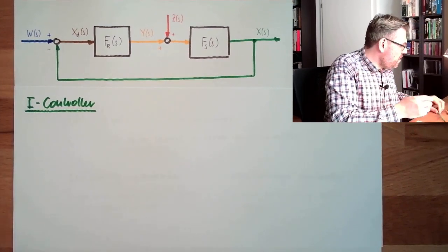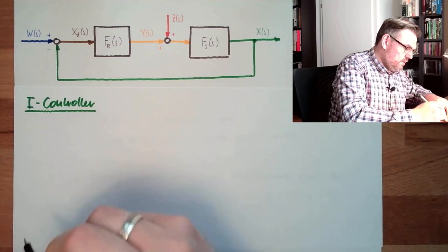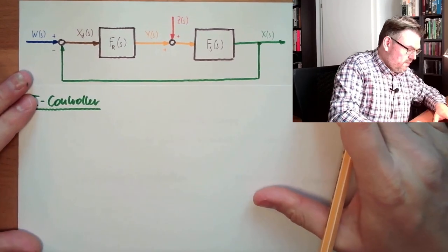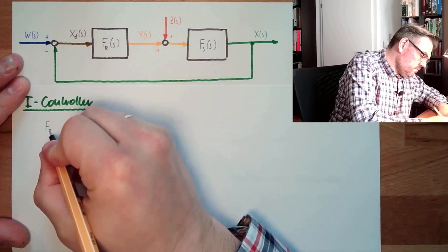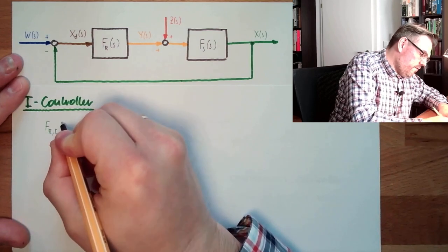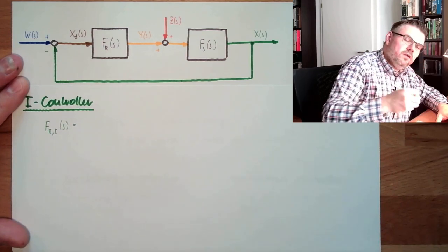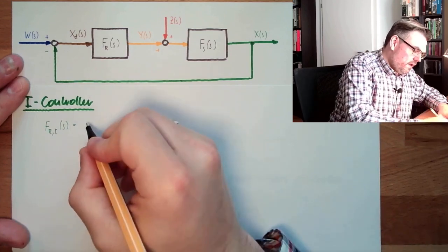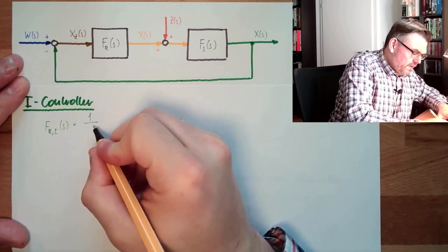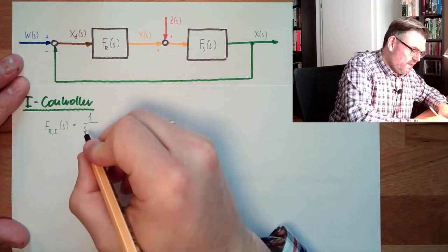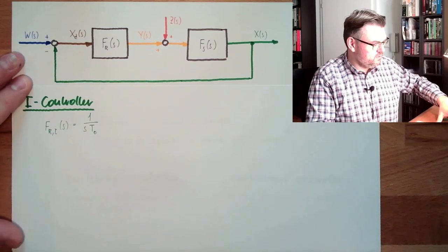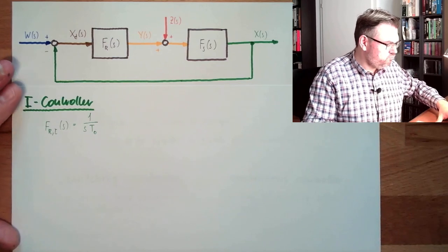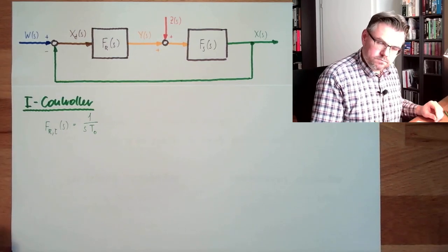So the transfer function of an I-Controller, Fr,I from S, is actually the transfer function of an I-Element. And this was 1 divided by S, and then we had T-I, however, in controllers we used to write T-N. So T-N, this is the integration time.